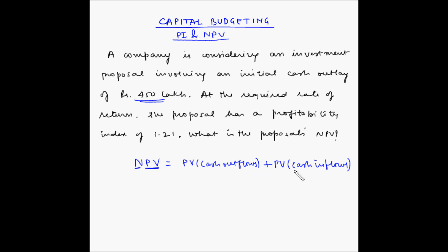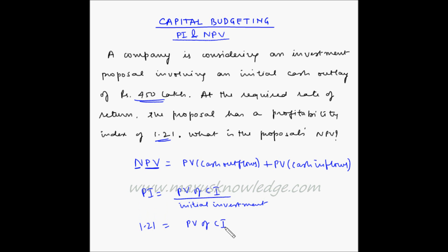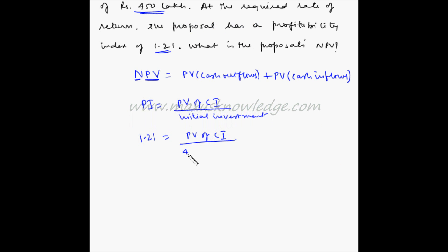We have been given that the present value of the cash outflow is 450 lakh. We don't know the present value of cash inflow, but we know the profitability index. Profitability index is equal to present value of cash inflows divided by the initial investment. Here, profitability index is 1.21, which equals present value of cash inflows divided by 450 lakhs.